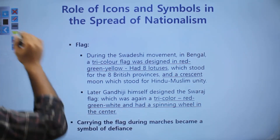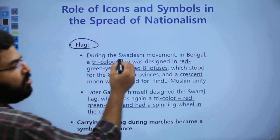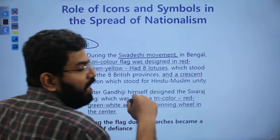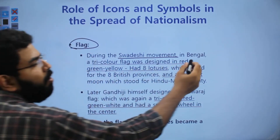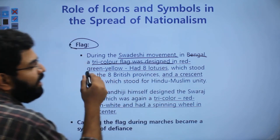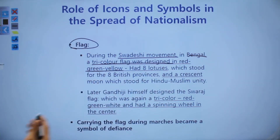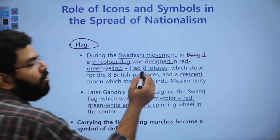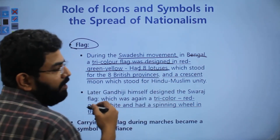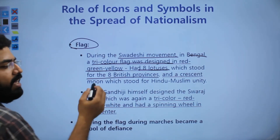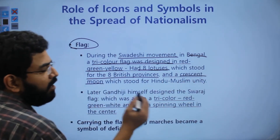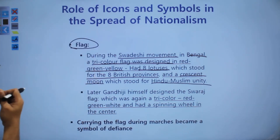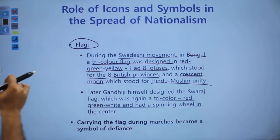There was also the symbol of the flag. It actually started during the Swadeshi movement in Bengal in the early 1900s, when a tri-color flag was designed in red, green, and yellow. Since the British had eight provinces in India, this flag had eight lotuses for the eight British provinces, and a crescent moon on top representing Hindu-Muslim unity. This was the original flag designed during the Swadeshi movement in Bengal.